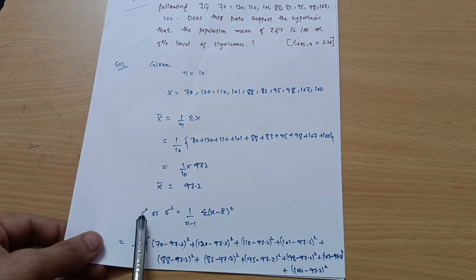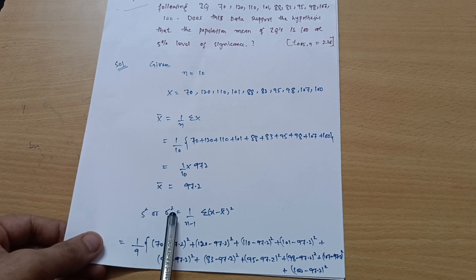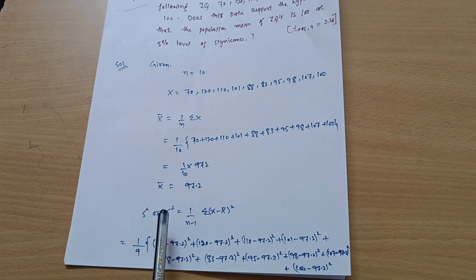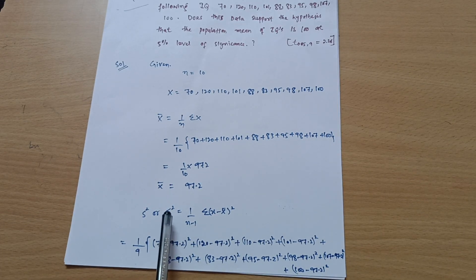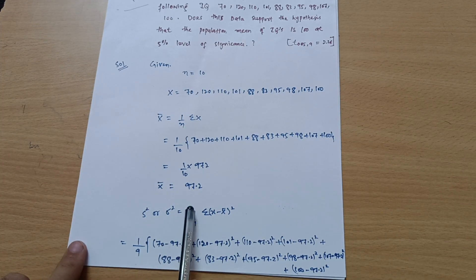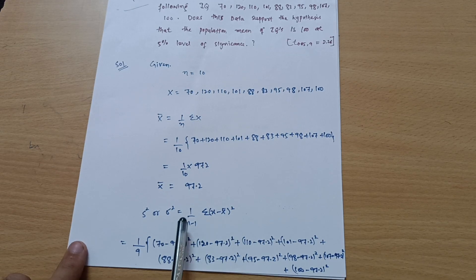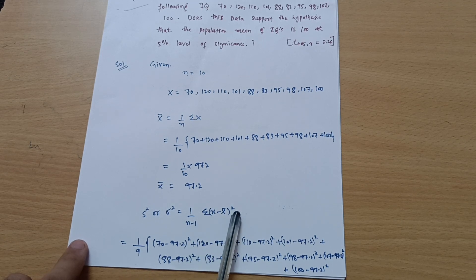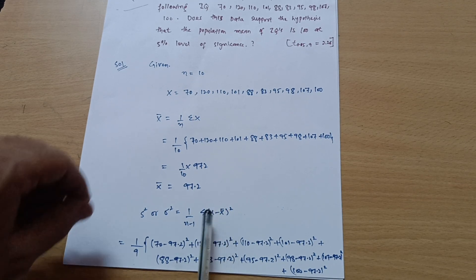Next is the formula for variance, represented as s-squared or sigma-squared. Don't be confused if you see it written either way in solutions. The formula is: sigma-squared equals 1 over (n minus 1) times the summation of (x minus x-bar) squared. With n equal to 10, that becomes 1 over 9 times the summation of (x minus x-bar) squared.